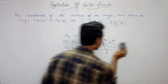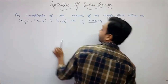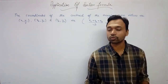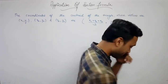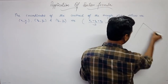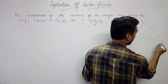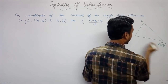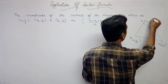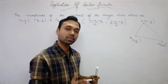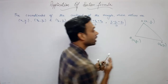So let's start this application and prove this result. This question does appear in exams: prove that the coordinates of the centroid are (x1+x2+x3)/3 and (y1+y2+y3)/3. I'm drawing a triangle here, naming it A, B, C with coordinates (x1,y1), (x2,y2), and (x3,y3). I won't draw all 3 medians — I'll work with just one median.